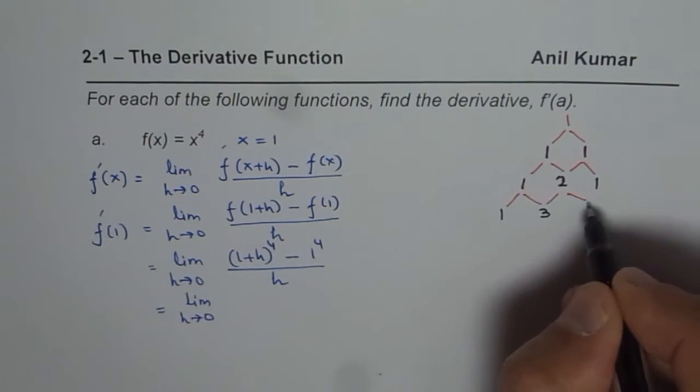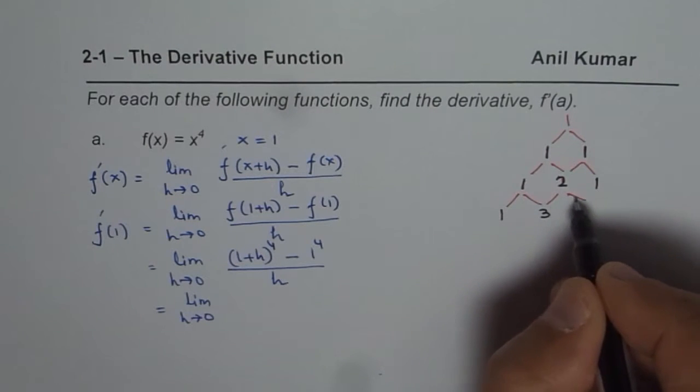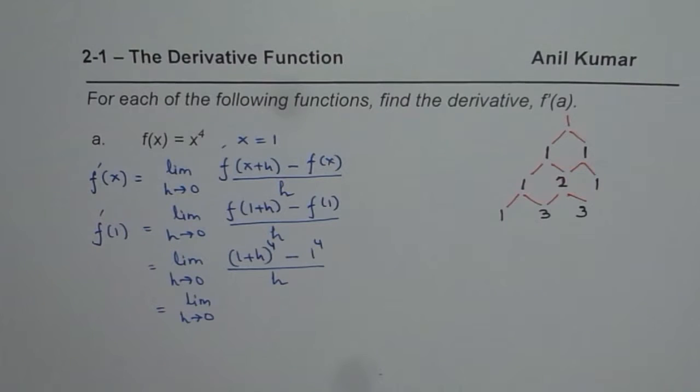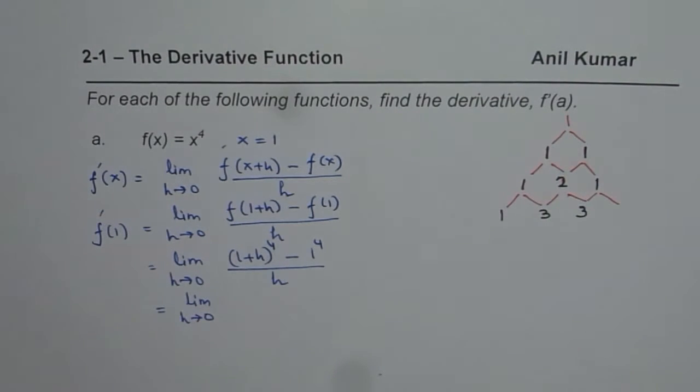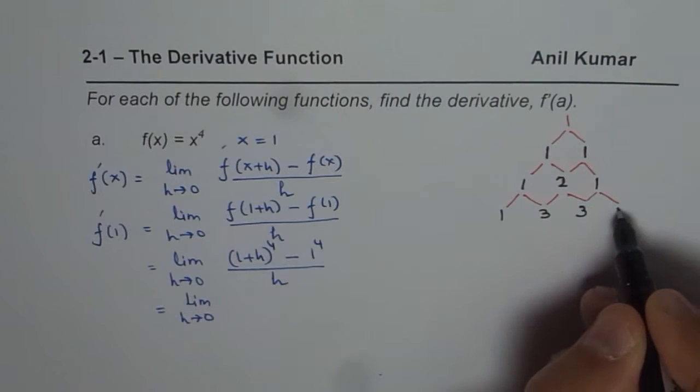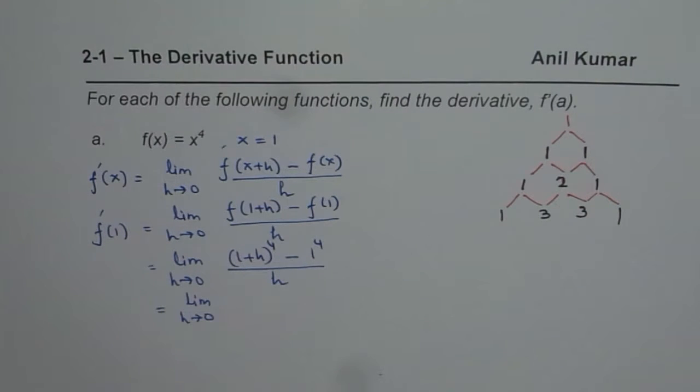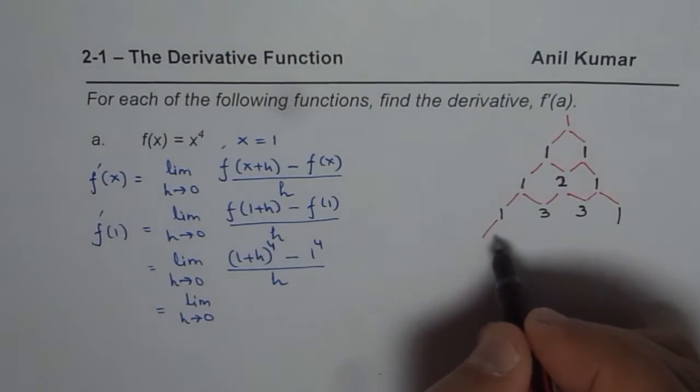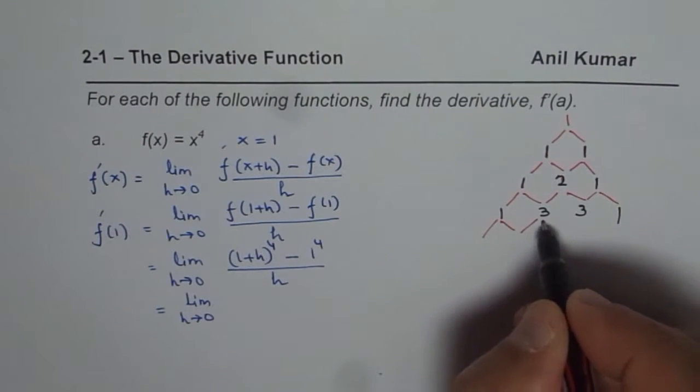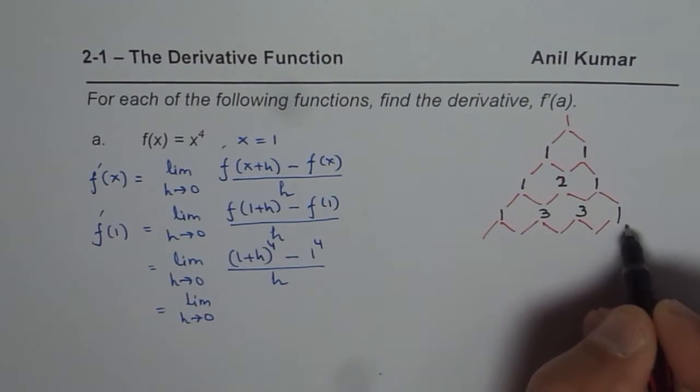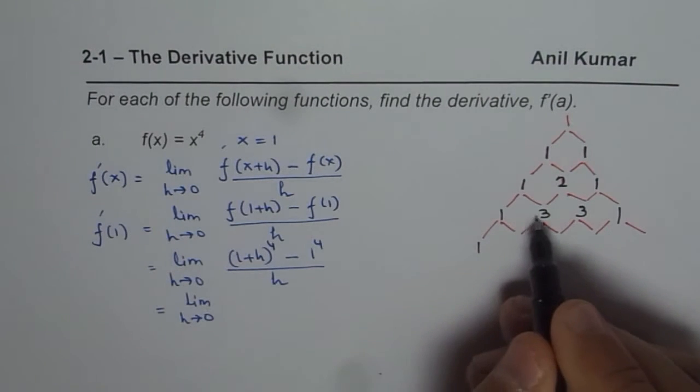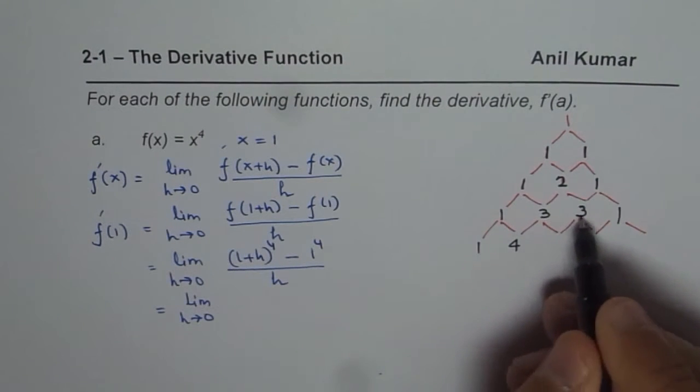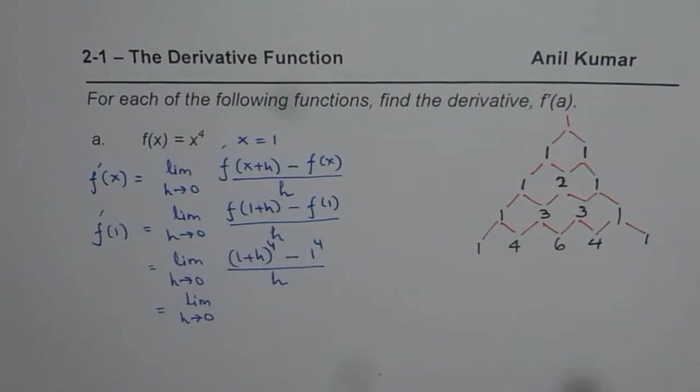1 plus 2 is 3, and then here we get 2 plus 1 is 3. Okay, so we get the third row where we have 1, 3, 3, 1. And now we need x to the power of 4, so we are interested in the fourth row. So combining previous 2 terms, 3 plus 1 is 4, 3 plus 3 is 6, 3 plus 1 is 4, and 1.